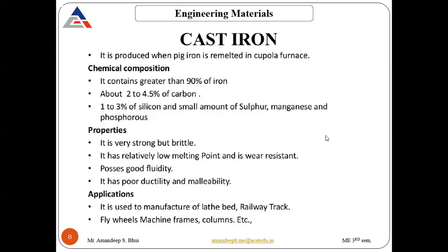The properties of cast iron are: it is very strong but brittle in nature. It has a relatively low melting point — around 1100 to 1200 degrees centigrade — but it is wear resistant, so wear does not happen quickly on it. It also possesses good fluidity; fluidity means when we melt any metal and test how it flows inside various passages. Its fluidity is very good, that is why cast iron is used for sand casting. It can flow easily.